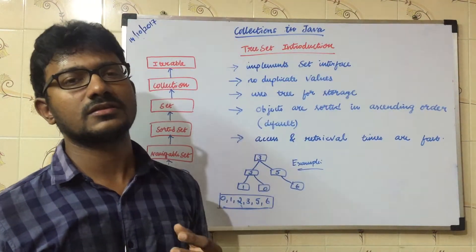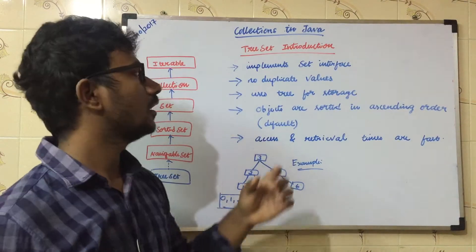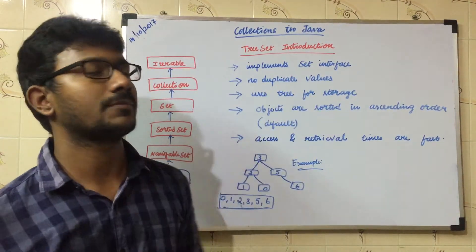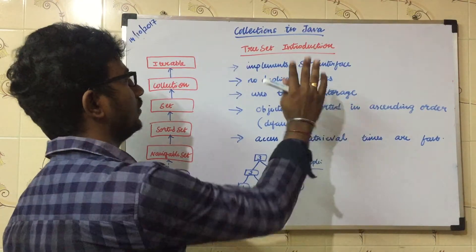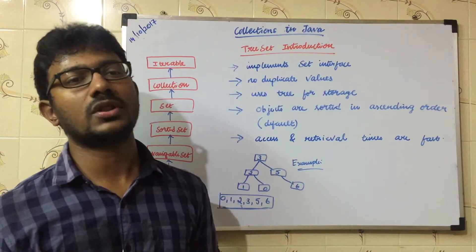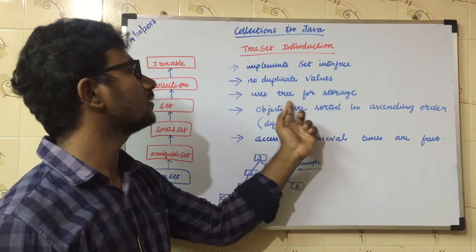Since it's an implemented class of Set interface, it follows the Set interface principle. The Set interface principle is no duplicate values are allowed. The same thing is followed here, and the important thing is the data structure that's used for storing the data in TreeSet is tree.